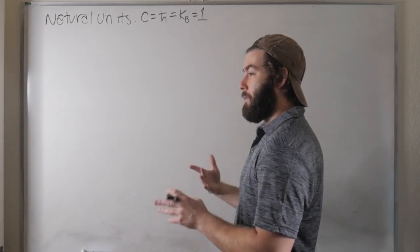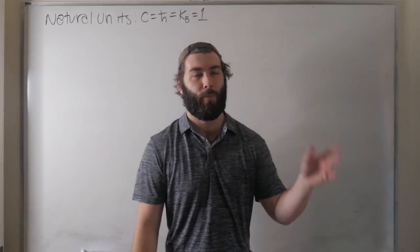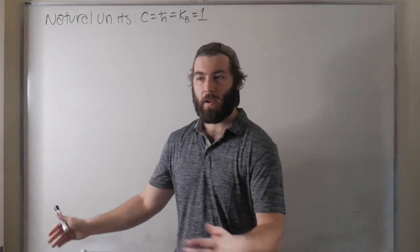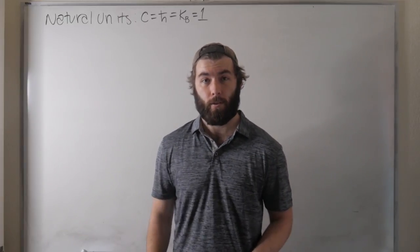In different versions of natural units with different names, you may set Newton's gravitational constant equal to 1 or the mass of the proton. The point of the video isn't to say look at all of these things we can set equal to 1. It's to say why we can do it in the first place and what it means.